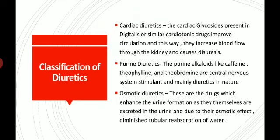This is the classification. In the classification, mainly there are eight classes: cardiac glycosides, cardiac diuretics, purine diuretics, osmotic diuretics, saline diuretics, acidifying diuretics, alkaline diuretics, mercury diuretics, and volatile oil diuretics.